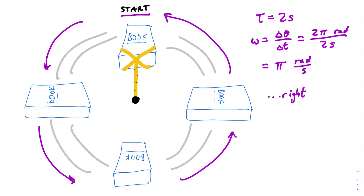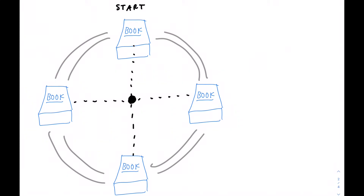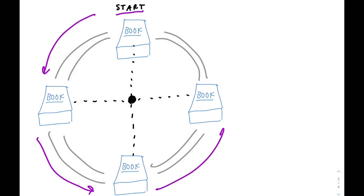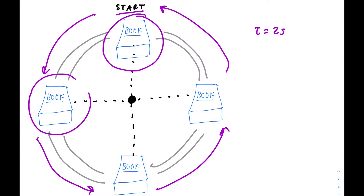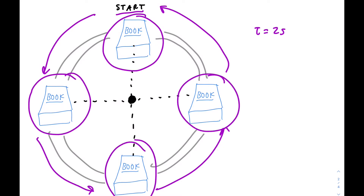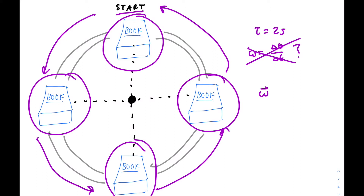Here's a second example that may at first seem like the previous one. We have a book starting at some position, spinning around at constant speed, going around a circle, taking two seconds to get back to its initial position. The only difference is that the book, instead of being attached to a rope, is just oriented in the same direction throughout the entirety of its motion around the circle. Can't we just still use angular velocity equals change in angle over change in time? Turns out this does not work — the angular velocity in this case is actually zero.